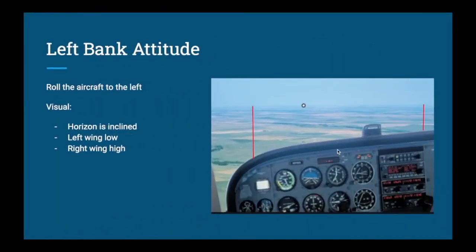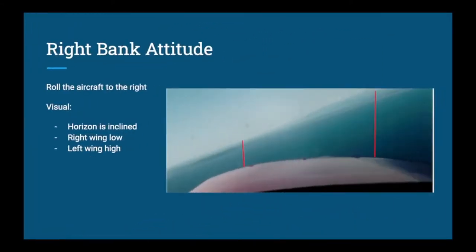Next are banked attitudes. In a left bank attitude, the aircraft's nose or cowling is at an incline to the horizon. Looking left, your left wing is pointing down at the ground; your right wing is pointing up into the sky. If you maintain a left banked attitude, the aircraft will begin a left-hand turn. In a right banked attitude, the aircraft is angled to the right relative to the horizon — the right wing is down toward the ground and the left wing is high. Maintaining a right bank results in a right-hand turn.